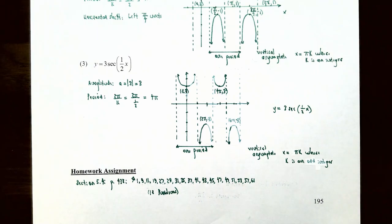This finishes our video on graphing the cosecant and secant functions. We talked about how to analyze the graphs of the secant and cosecant functions and how to use transformations to graph variations of those functions. If you have any questions about the examples in this video or while working on homework for this section, please let me know, and I'll see you in the next video when we talk about inverse trigonometric functions and their graphs.